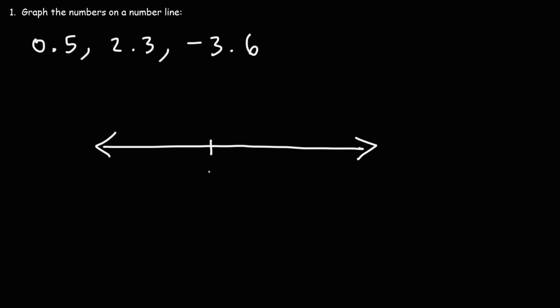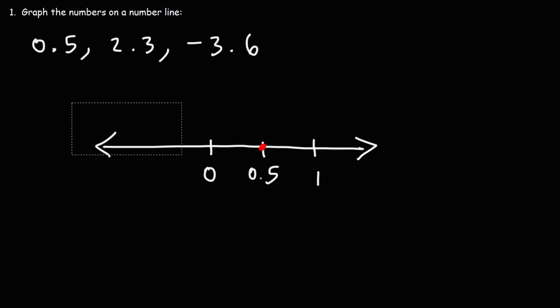So let's put 0 here and 1. Zero-point-five is right in the middle of 0 and 1, so 0.5 is going to be right there — it's the midpoint of 0 and 1.